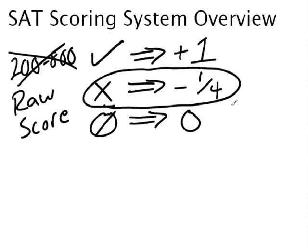The one thing that really confuses students from the get-go is that if you get a problem wrong, not only do you not get the points, but you actually get a quarter of a point removed from your score. That's kind of strange — you don't really see that happen in school. If you get a ten-question quiz, your math teacher doesn't dock points; he just doesn't give you those particular points. But on the SAT, this is how it works. We're going to talk about why they do this and how, once you understand this system, it will affect whether or not you guess on certain questions.